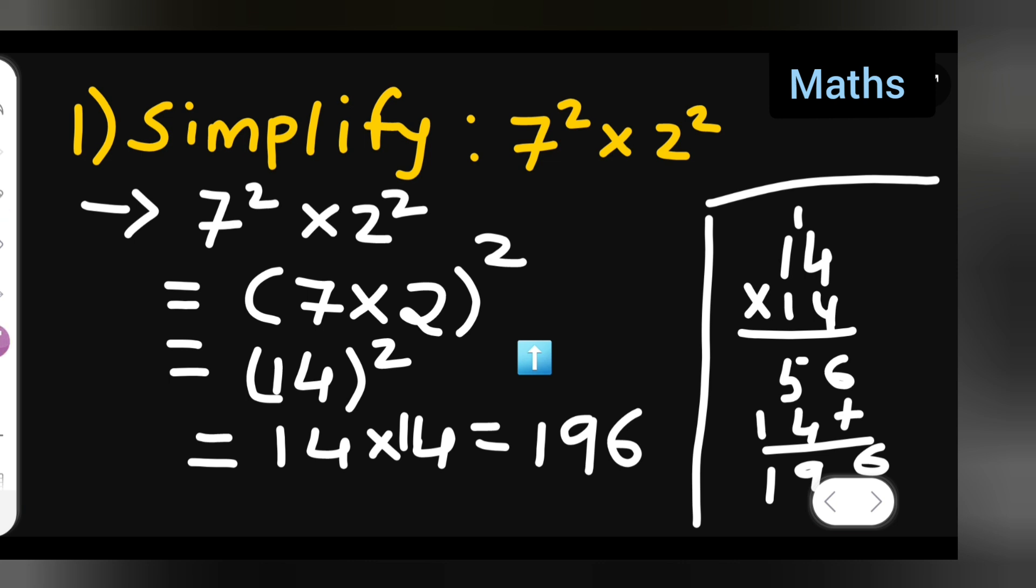I hope you all have understood how to simplify the given number 7 square multiplied by 2 square. Answer is 196. I hope you all have understood and thanks for watching.